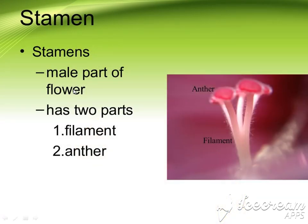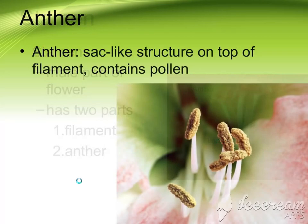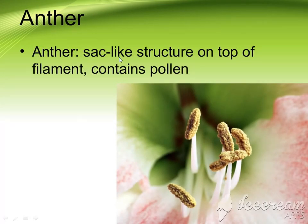Stamen is the male part of the flower, and it has two parts: filament and anther. As you can see, the long tube-like structure is called the filament, and the part at the end is called the anther. The anther is a sac-like structure on top of the filament, which contains different pollens.